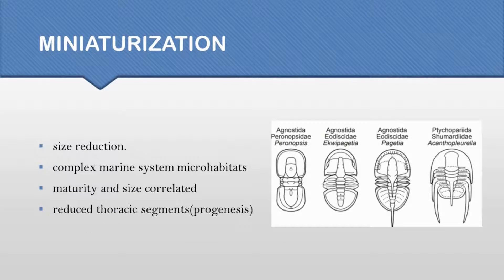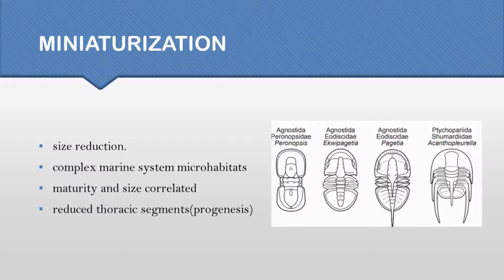Then we come to miniaturization. The segments of the thorax or the whole trilobite got smaller in size. If progenesis is present in a trilobite species, then miniaturization occurs in the thoracic segment. Also, the size of the trilobite and its maturity are related — if the trilobite matures early, it will be smaller in adulthood.